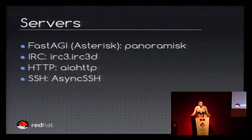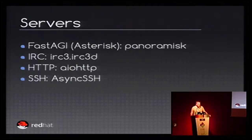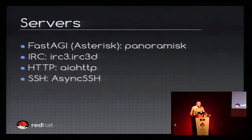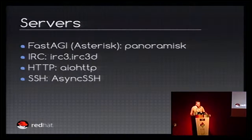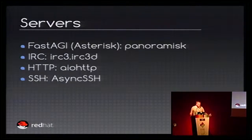It's also interesting to write servers, because asynchronous programming is very efficient for network servers. Currently the list is quite short — we only have four supported protocols. I hope that next year the list will be much longer. The first one is FastAGI, which is a protocol for the Asterisk telephony server, called Panoramisk. For IRC, we saw the irc3 module — it has a submodule called irc3d which is the IRC server implementation. For HTTP, you have aiohttp, which is the most used HTTP server implementation for AsyncIO. And for SSH, you also have a server called AsyncSSH.